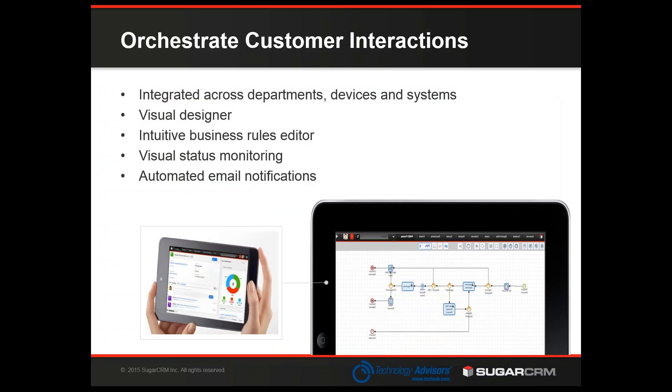So how is Advanced Workflow different than the workflow tool you might be using today in Sugar Professional, or even in Sugar Enterprise with the old workflow tool before the introduction of Advanced Workflow? Advanced Workflow is designed to orchestrate customer interactions and to work across departments, devices, and systems. One of its key features is a visual editor, and it also has what it calls a business rules editor. You can use business rules to set up rules that will be used in one or more processes, making it easier to manage complex processes. Advanced Workflow also has visual status monitoring where you can see where a particular instance of a process is at any given moment, and it has the ability to do automated email notifications.